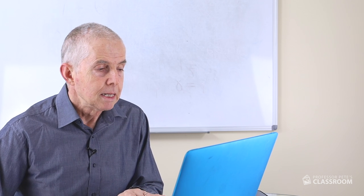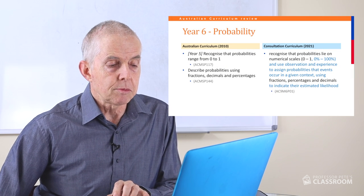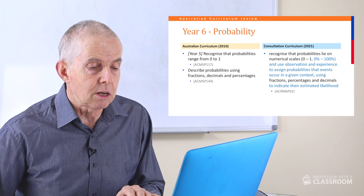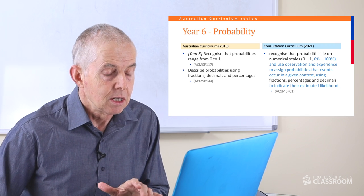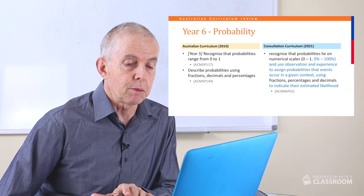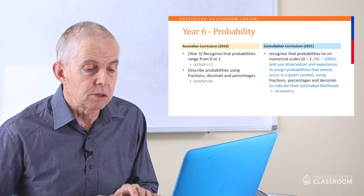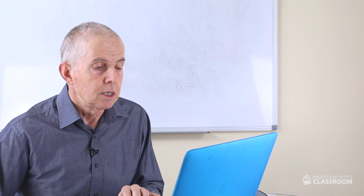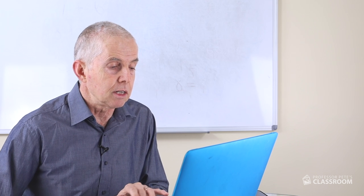We'll move on to probability, which has a 6P code. The first part of the new content descriptor has come from the old year five curriculum: recognise that probabilities lie on a numerical scale zero to one — and it adds 0% to 100%, which is nice. Use observations and experience to assign probabilities that events occur in a given context using fractions, percentages and decimals to indicate their estimated likelihood. It's combined two previous content descriptors, and the extra detail is very welcome.